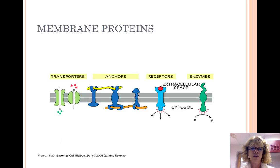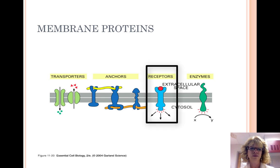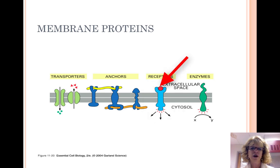Membrane proteins perform most of the functions of the cell membrane. There are 50 kinds of different membrane proteins on the surface of a human red blood cell. Receptor proteins receive chemical messages from other cells. The shape of a receptor protein matches the shape of a specific messenger. For example, a hormone would be a messenger. When the two bind, it triggers a chain reaction, usually involving other proteins, which relay the message to a molecule that performs a specific function inside the cell. This is called signal transduction.